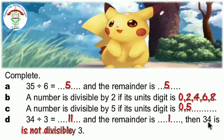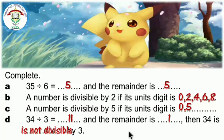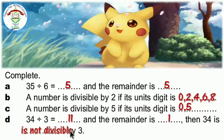So 34 is not divisible by 3 because the remainder is 1. We know a number is divisible when the remainder is 0, but in this problem the remainder is 1, so 34 is not divisible by 3.